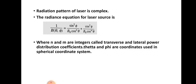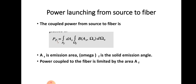The radiance equation for the laser source is: B(θ, φ) = sin²φ / (B₀ · cosⁿθ) + cos²φ / (B₀ · cosᵐθ), where n and m are integers called the transverse and lateral power distribution coefficients, and θ and φ are coordinates in the spherical coordinate system.